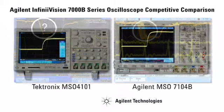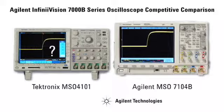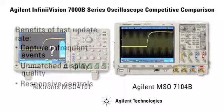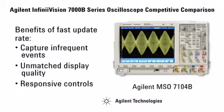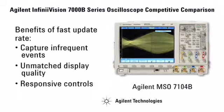If you've ever had the experience of turning deep memory on and having your scope's responsiveness to control slow dramatically, you were also a victim of slow update rates. Agilent InfiniVision scopes optimize for the deepest memory available on each measurement, so you're always getting the most signal visibility possible.